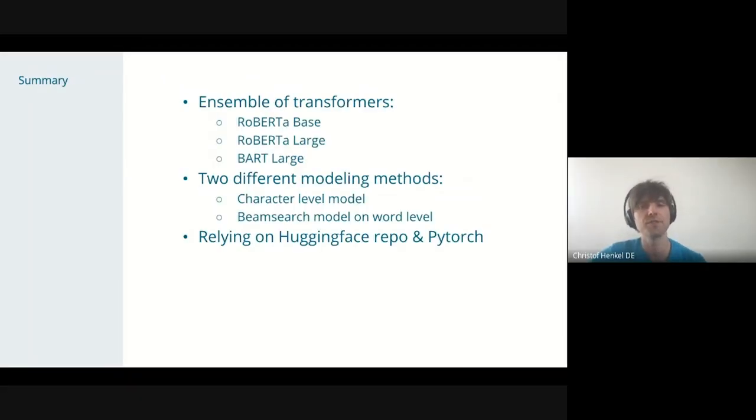So our solution is, let's call it a simple ensemble of different transformers, different transformer backbones, namely based on Roberta base and Roberta large and also Bart large. What gave us the push to the top positions was two different modeling approaches, which each of us developed individually. So my model has a specific head that accounts for character level prediction, which we will see is quite important for this competition. And Koi's model uses the beam search head to leverage more from the spam predictions by conditioning on the start token. We heavily relied on the hugging face repository and used PyTorch.